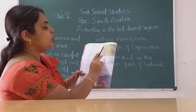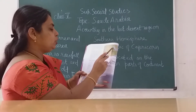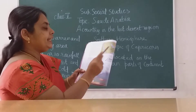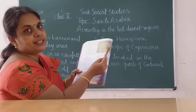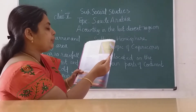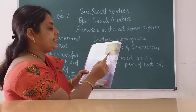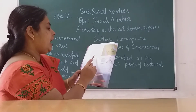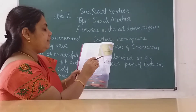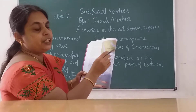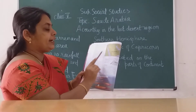Saudi Arabia's neighboring countries: to the north you have Jordan, Iraq, and Kuwait. To the east you have Qatar, Bahrain, and UAE. Oman and Yemen lie to the south. The Red Sea is to the west, and the Persian Gulf is to the east of the country.